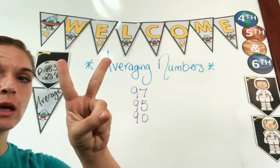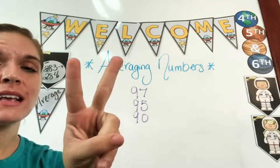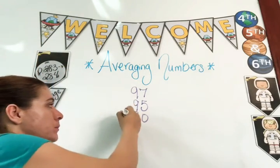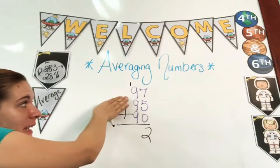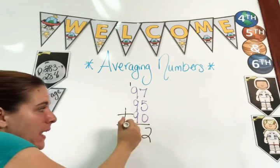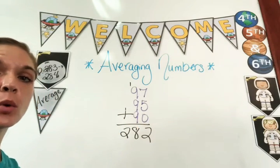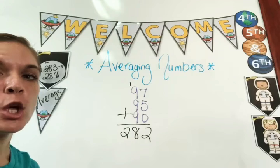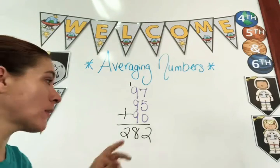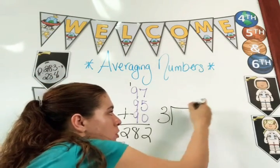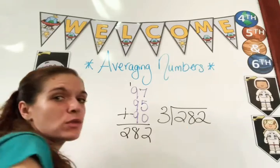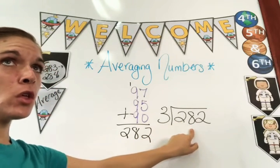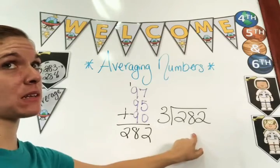To find an average there are two steps: one — add ('suma'), two — divide ('dividir'). Add and divide. Watch: you add 97 + 95 + 90. Seven plus five is 12, put your one here; one plus nine is ten, plus nine is nineteen, plus nine is twenty-eight — you get 282. Then you divide by the count of numbers: you have three numbers, so you divide 282 by 3. Can 3 go into 2? No. Can 3 go into 28? Yes — 3 times 9 is 27.